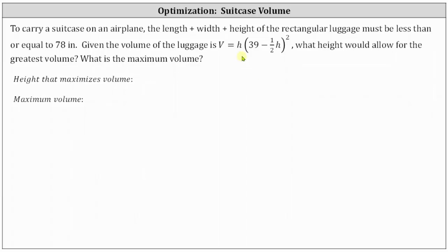To begin, there is a restriction on the values of h. Since the length plus the width plus the height must be less than or equal to 78, we can also say that h must be greater than or equal to 0 and less than or equal to 78. Let's go ahead and state that restriction.